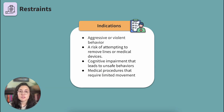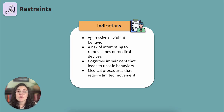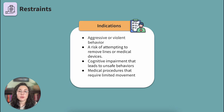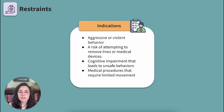Restraints must be clinically justified. We need a client who is a risk to themselves or others, and we must have exhausted all other options prior to applying restraints. For example, we can't place a fall-risk client in restraints without first trying bed alarms, frequent needs assessments, or a one-to-one sitter. Indications include aggressive or violent behavior, risk of harm to self or others, risk of removing lines or medical devices, cognitive impairment leading to unsafe behaviors, and medical procedures requiring limited movement.